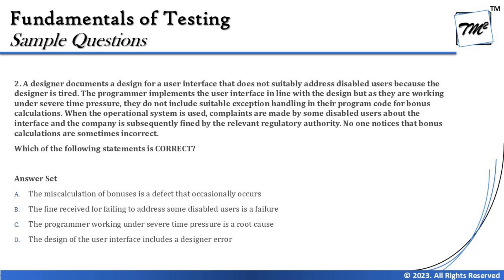Option B says 'the fine received for failing to address some disabled users is a failure.' No — the fine is more of a regulatory consequence. The system not suitably supporting special users is the failure, and that failure eventually results in a fine. But the fine itself is not a failure; as part of the regulatory checks, you have been fined for the failure of not meeting the desired expectations of those special users.